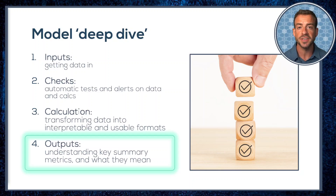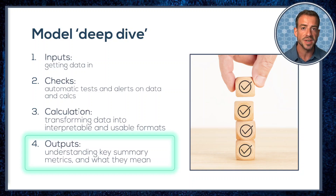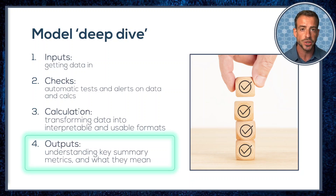We've reached the final section of our model deep dive. We've seen how we get data into the model and how calculations transform it into a data-rich expression. Now we're going to look at how we take all of that data and summarize it into a small number of actionable and intelligible measures and statistics.